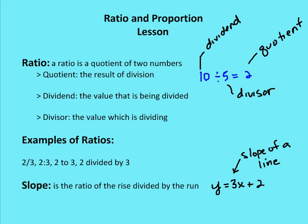Examples of ratios would be 2 over 3, or 10 over 5. You can also write a ratio as 2 to 3 using a colon, or as 10 divided by 5. So those are all examples of ratios — 2 over 3, 2 to 3, and 2 divided by 3 are all equivalent notations.